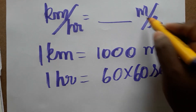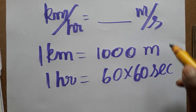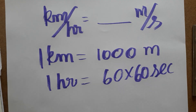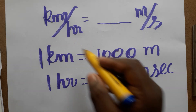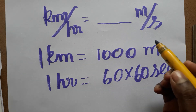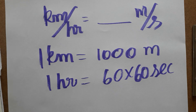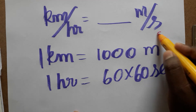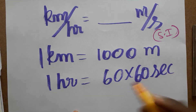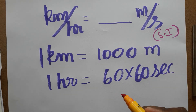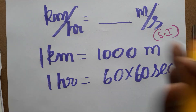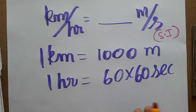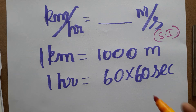In the MKS system, which is used in the SI unit system, that is the reason we need to know how to convert. When we are doing numericals, we have to convert kilometer per hour to meter per second because it is in the SI system — system of international units.